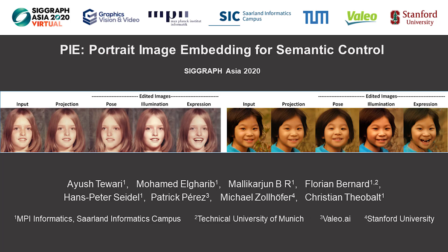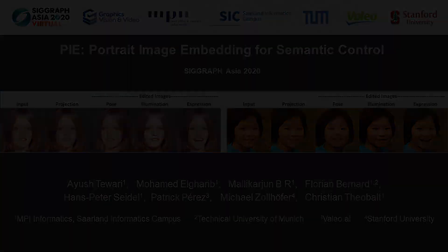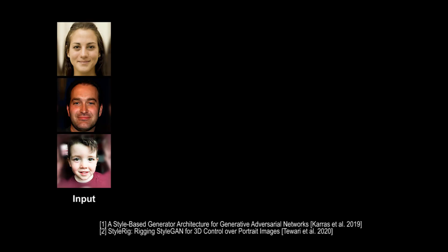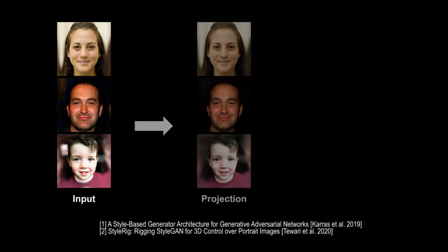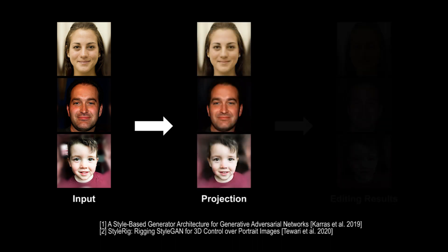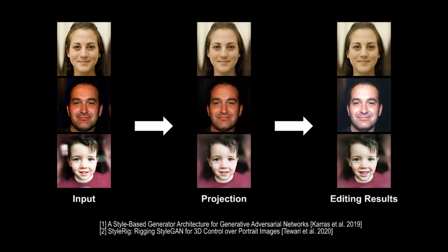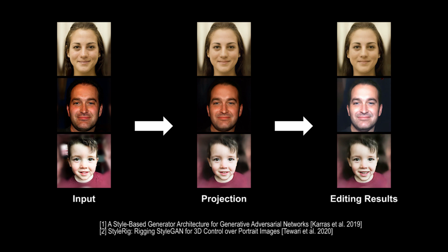We present a novel method for intuitive and semantically meaningful editing of portrait images. Our optimization-based method embeds the input image in the latent space of StyleGAN, such that it can be edited using StyleRig. Our method ensures that the projections onto the StyleGAN latent space are close to the input images, and that the edited images are photoreal, preserving the identity of the person.